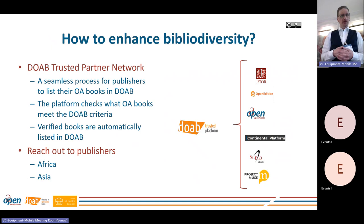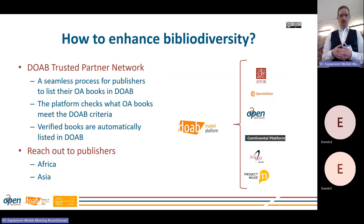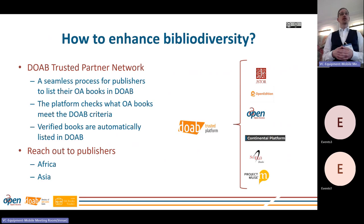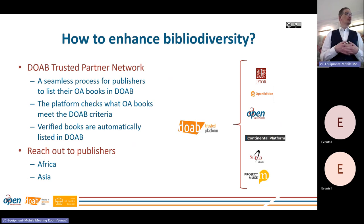We think one of the things we can do is by inviting more members to our DOAB Trusted Platform Network, which is a network of publishers that helps them to seamlessly add their books into the Directory of Open Access Books. What we do is ask a publisher which is part of the network to assess publishers for us, because we are a Dutch-based organization. We have our own biases and we try to amend that by working with publishers and partners from other parts of the world.